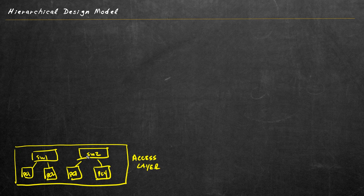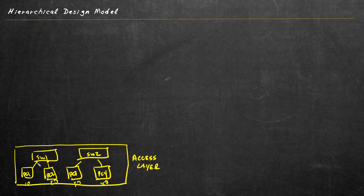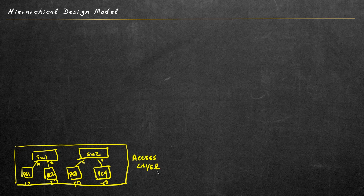Let's imagine the access layer supports four different VLANs. PC1 is in VLAN 10, PC2 in VLAN 20, PC3 in VLAN 30, and PC4 in VLAN 40. We control this by configuring switch ports — Port A as an access port for VLAN 10, Port B for VLAN 20, Port C for VLAN 30, and Port D for VLAN 40. For IP subnets we'll use 10.V.x.x /24, making the second octet match the VLAN number for convenient identification. So PC1 is on the 10.10 network, PC2 on the 10.20 network, and so forth.